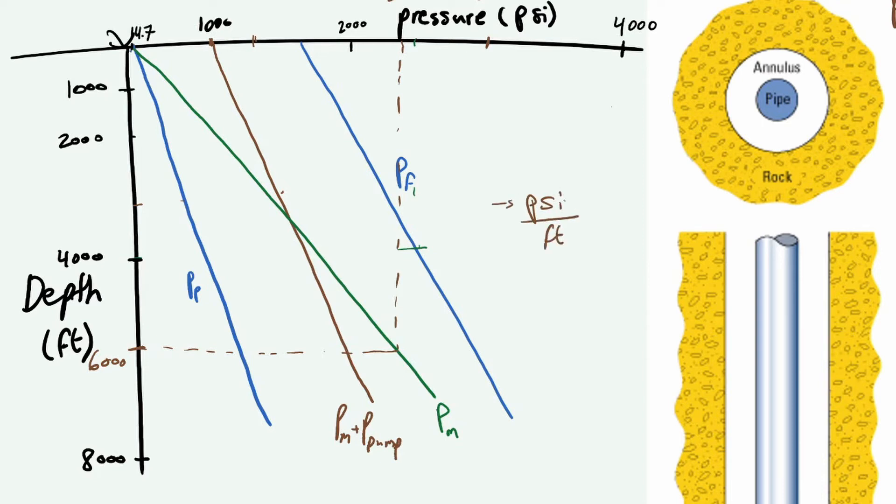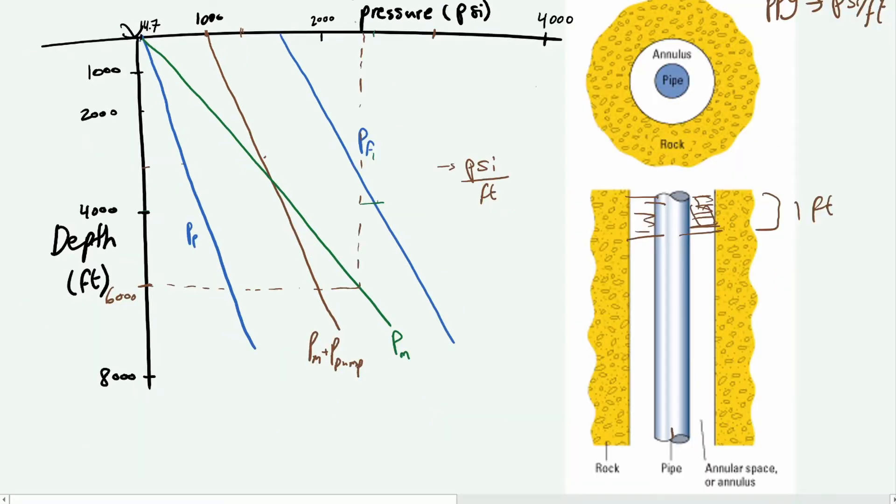So 2400 psi—the gradient is psi over feet. So how many psis of pressure you are exerting on the formation per one foot of mud. So how many psi, which we said 2400, and that's over 6000, and that would give you 0.4 psi per foot.